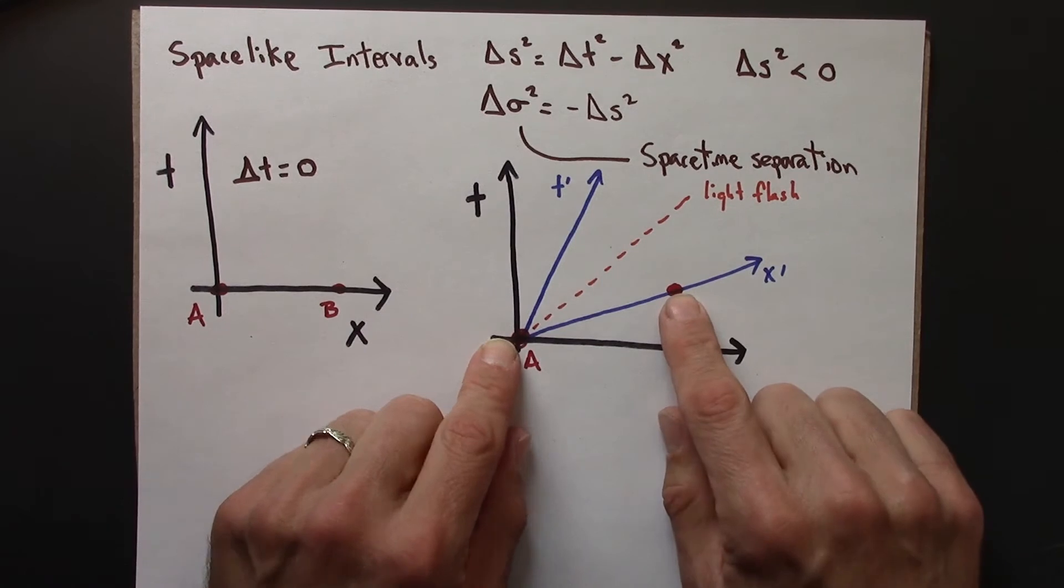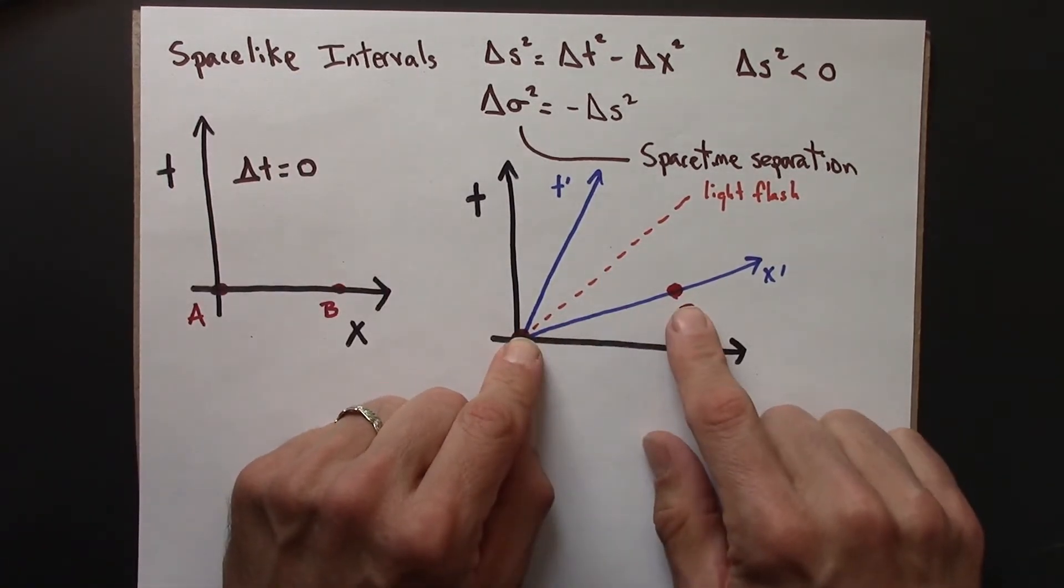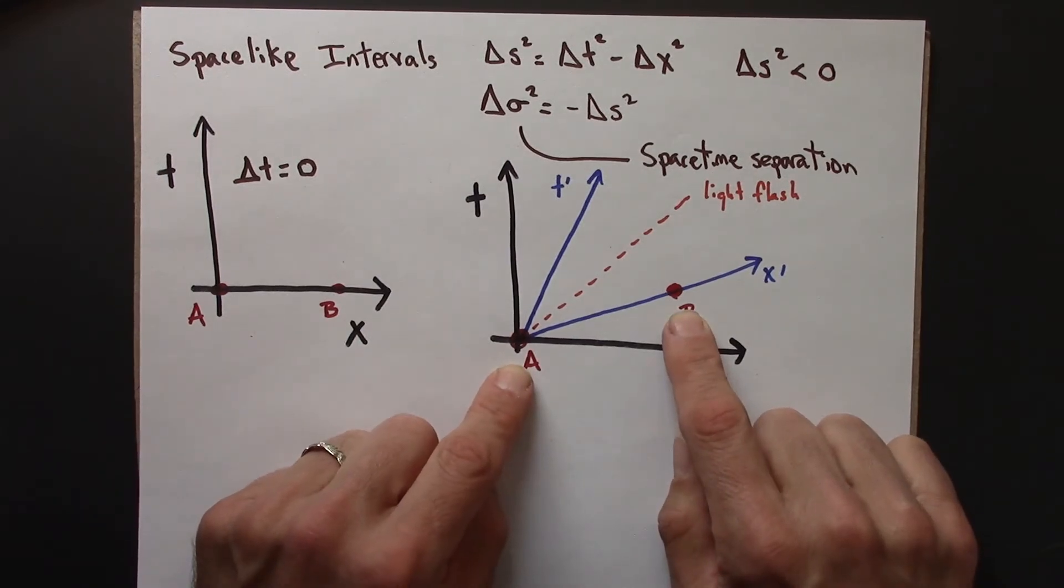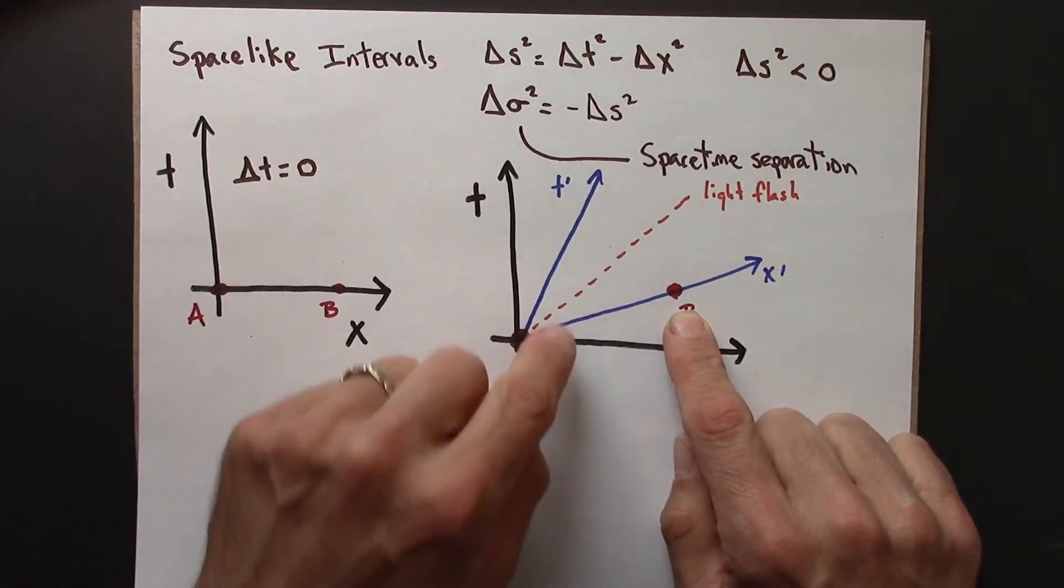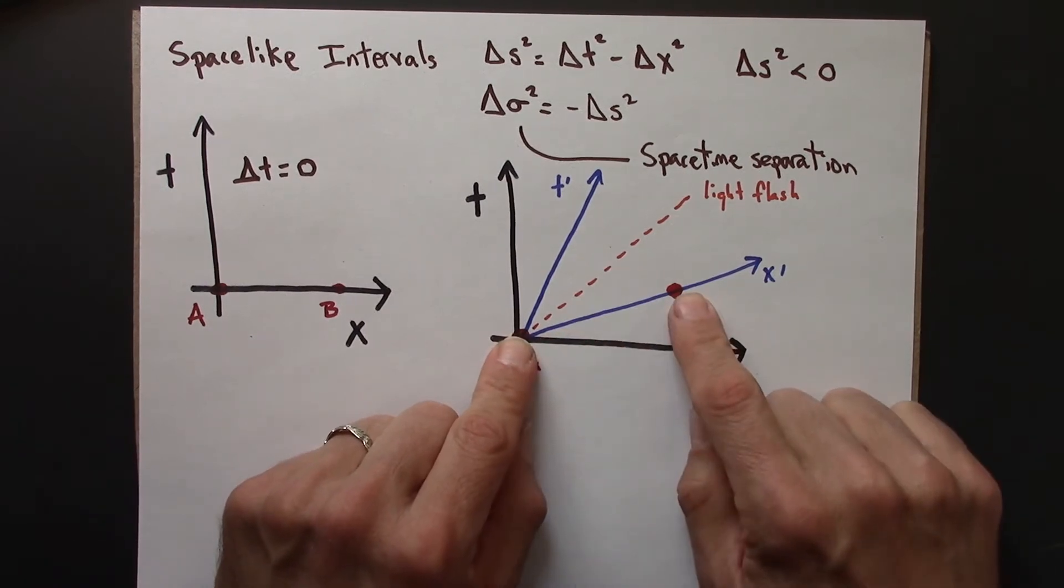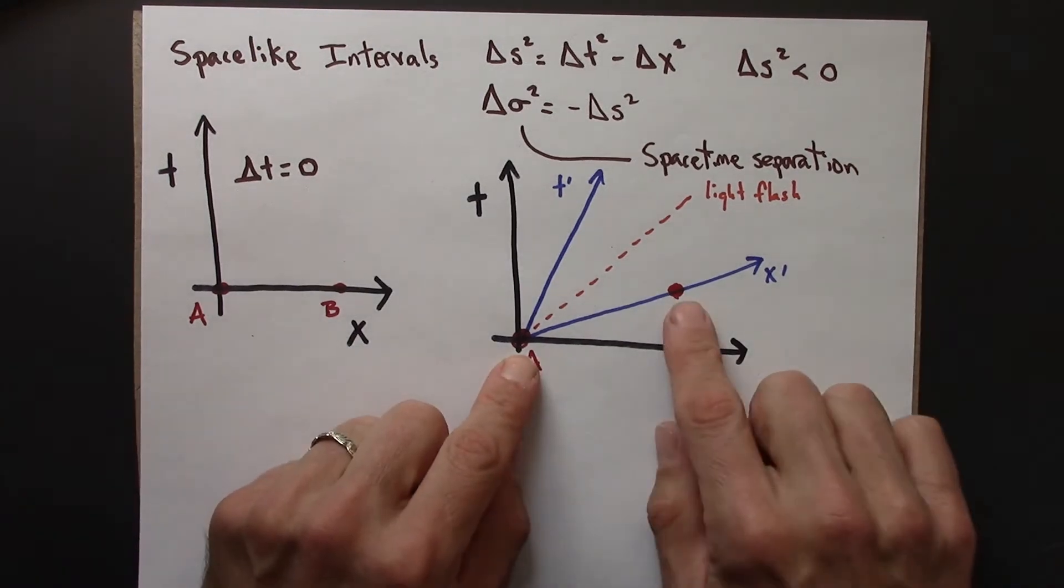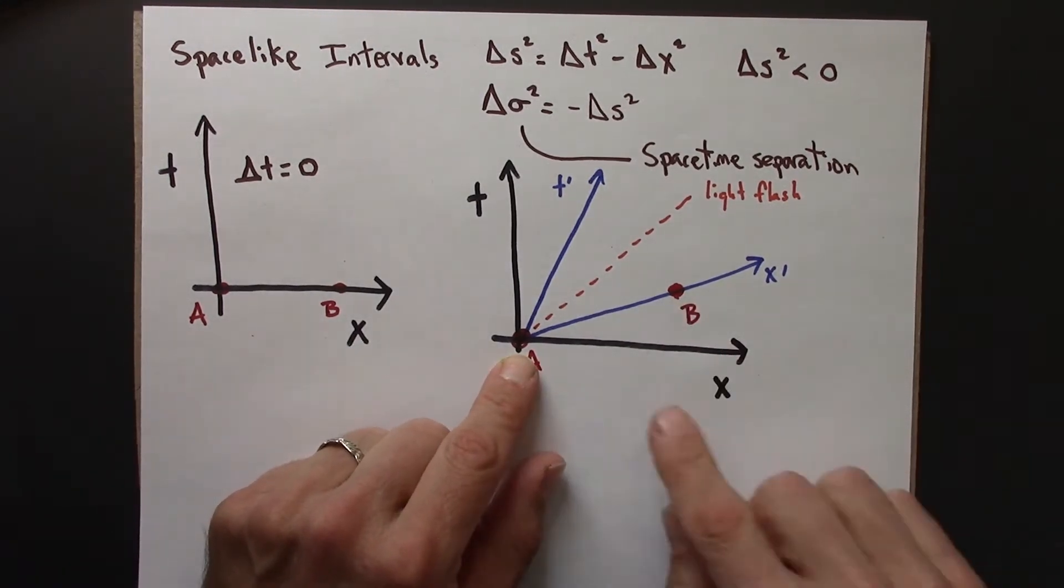And so we could measure this simply with a ruler. There wouldn't even need to be a clock involved. So even if we're over here, it's still spacelike in that there's some reference frame in which the spacetime interval is purely spatial. It can be measured only with a ruler.